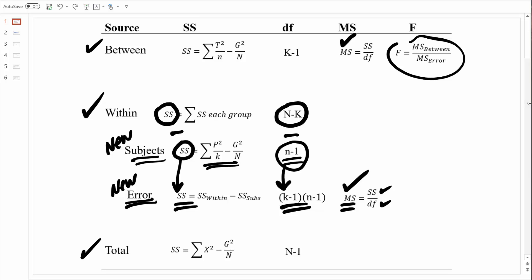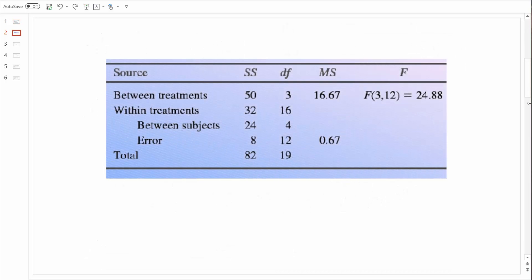Let me show you another example where you can see more clearly how these formulas work together. When we do the repeated measures ANOVA, we use an ANOVA source table just like in the past, with total, within-treatment, and between-treatment variability all computed using the same formulas as before. Between plus within should equal the total. In this example, sum of squares between treatments equals 50, sum of squares within treatments equals 32, and 50 plus 32 equals 82 — matching sum of squares total of 82.